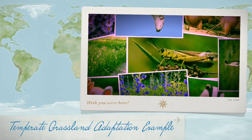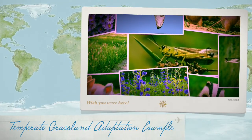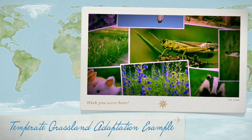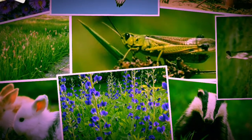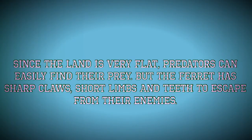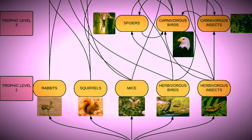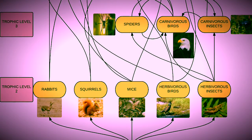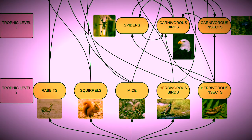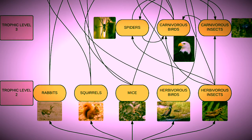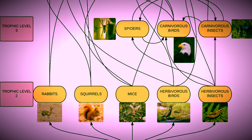The black-footed ferret from the temperate grassland is a great example of how animals have adapted to their biome. Take a look at this food web — it's actually very important to a biome.